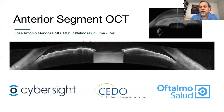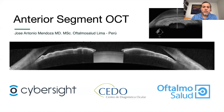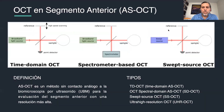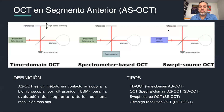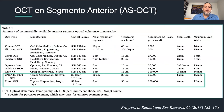Thank you for inviting me again to give a lecture in this webinar series. Today we will talk about anterior segment OCT. We have three different technologies applied for anterior segment OCT, much the same as we have for posterior segment OCT: regular time domain OCT, then the second generation spectral domain or spectrometer-based OCT, and then the third generation called swept source OCT.